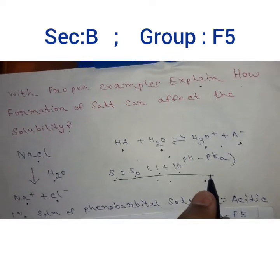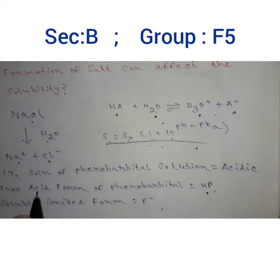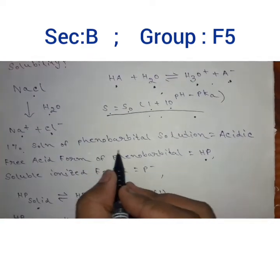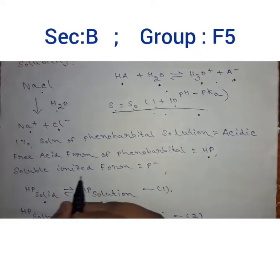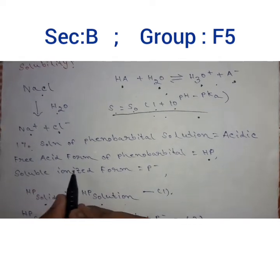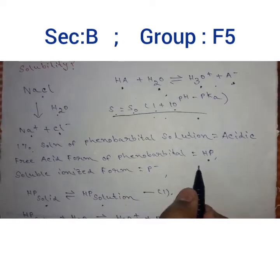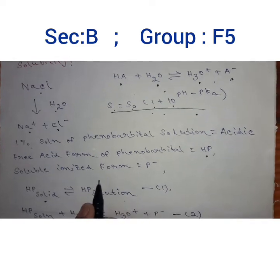To prove this equation, we take 1% solution of phenobarbital solution. The free acid form of phenobarbital is HP, and the soluble ionized form is P-.